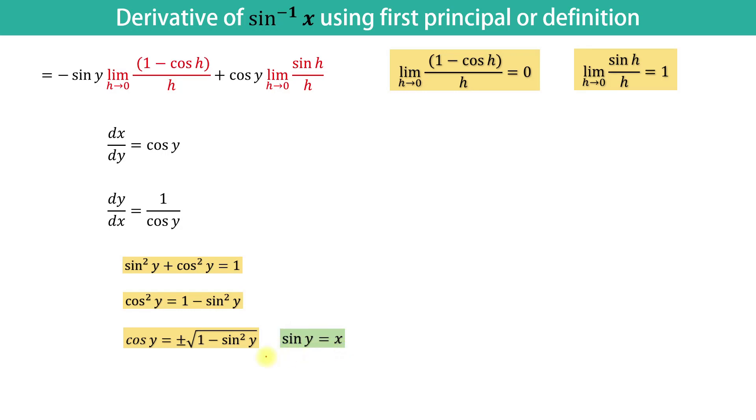Since we have taken sin y is equal to x, we can replace sin y by x and we get cos y is equal to plus minus square root of 1 minus x squared. But wait. Since sin inverse of x lies in the closed interval negative pi by 2 and pi by 2, y also lies in this interval because we have taken y equal to sin inverse of x.